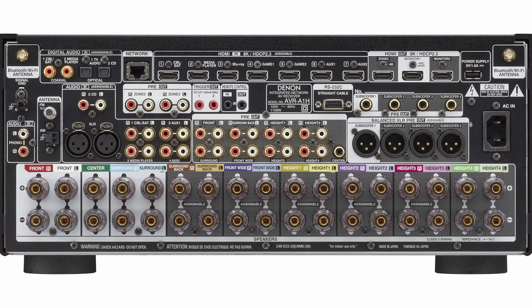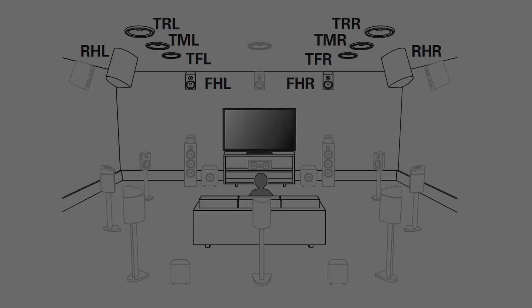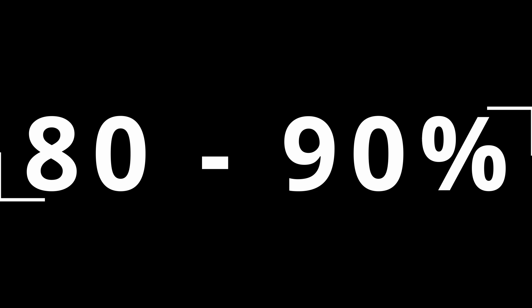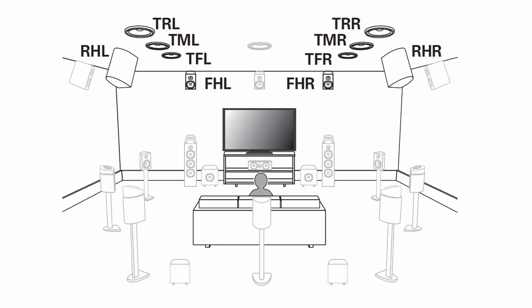Cool? Yes. Necessary? Not really. To be clear, the main surround sound speakers in a Dolby Atmos or DTS-X system are still the 5.1 or 7.1 primary speakers — this is where 80 to 90% of the surround sound is focused, with the rest coming from the additional speakers.